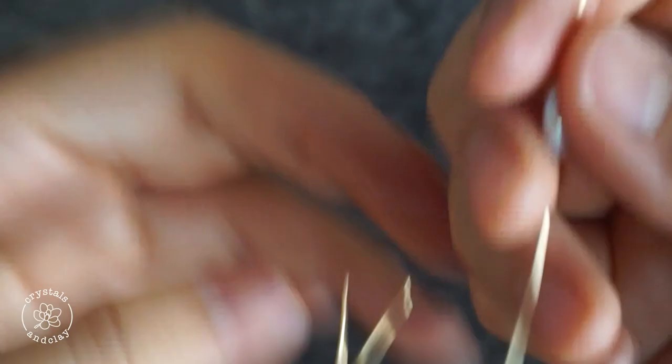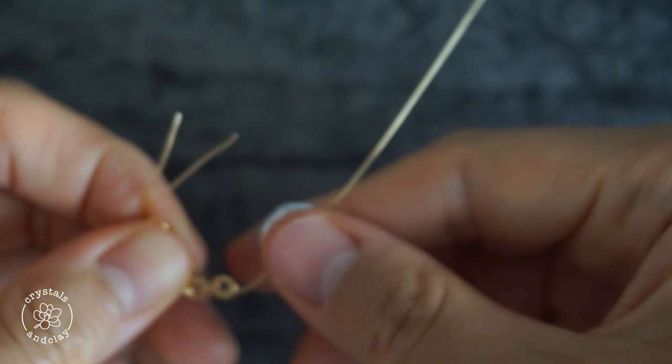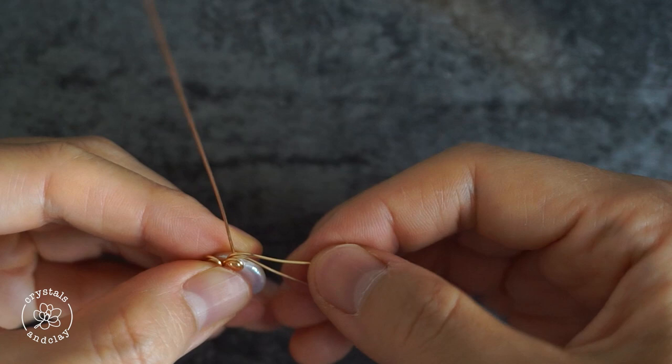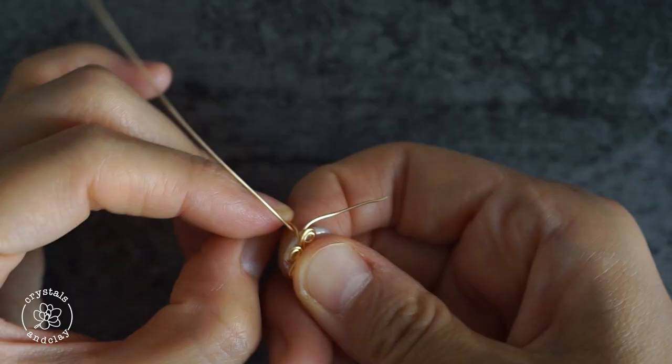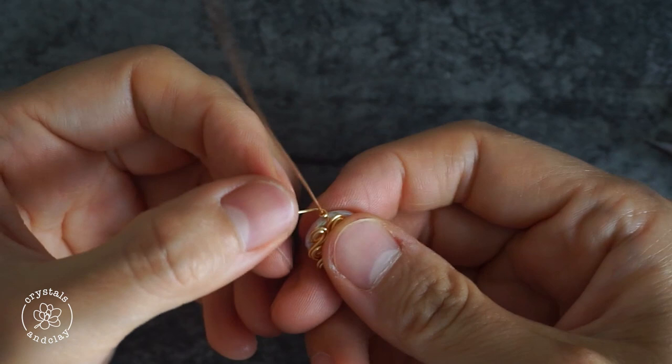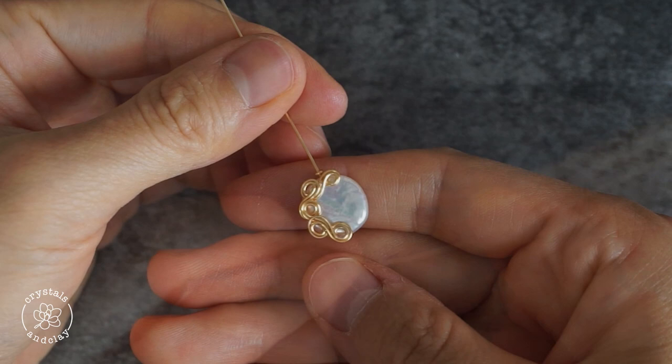Now slide the pearl onto the wire and place the decorative loops on top of the pearl. Use one end to secure the loops against the pearl. Cut off the other end, as well as the extra wires after wrapping. Now we got a beautiful decorated pearl bead.